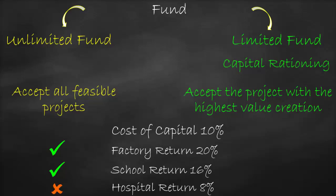We reject the hospital not because we don't have enough funds, but because the project is not profitable. But if we have limited funds — meaning we don't have enough to cover all projects — we need to choose only one: the highest returning profitable project. Between the factory and school, the factory gives a higher return, so with limited funds we choose only the factory.